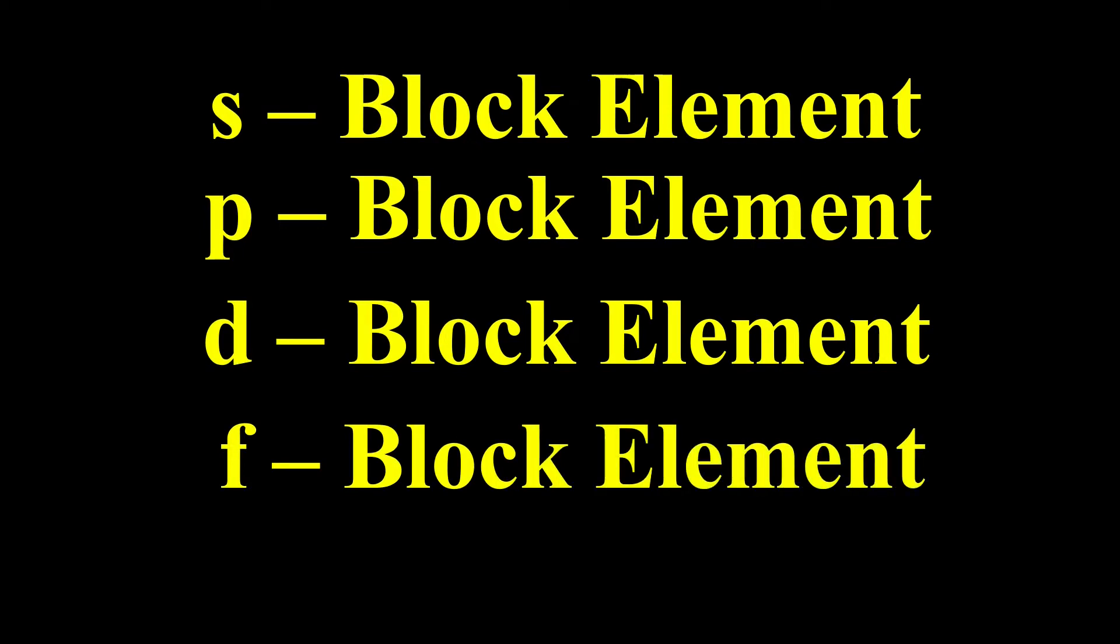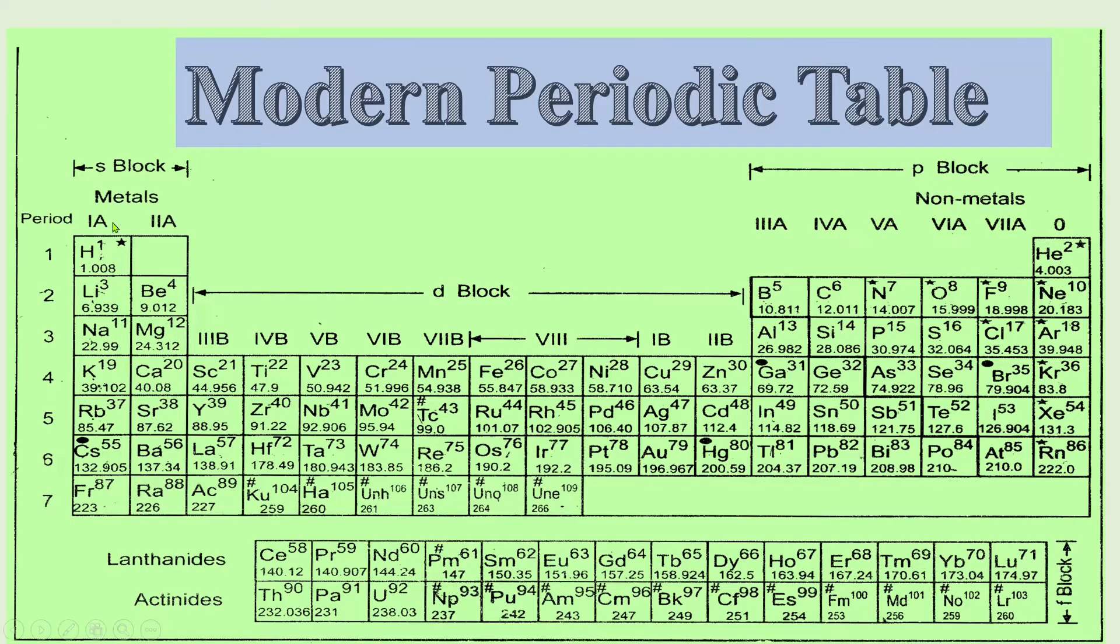And their position in the periodic table is this. Group 1A and 2A represents S block element. And in the same way, in right hand side, 3A, 4A, 5A, 6A, 7A and 0 group elements are P block element.